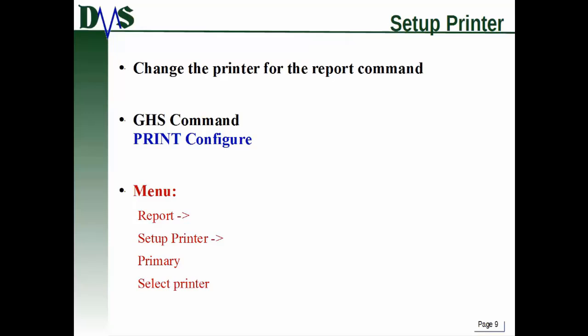When you print the report it will send it to the default printer — the printer that GHS has selected as the default, not your system default. GHS keeps its own record of which printer to use. The command for configuring the printer is 'print configure', but personally this is one where you'd be better off doing it through the menus: report, set up printer, primary, select printer. That's the easiest way to do that, and you only have to do it once — GHS remembers your settings after that.